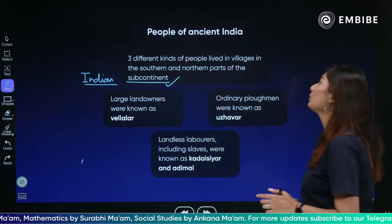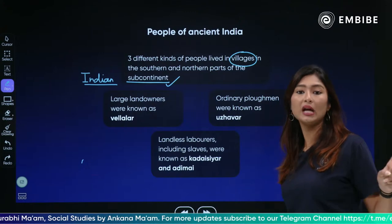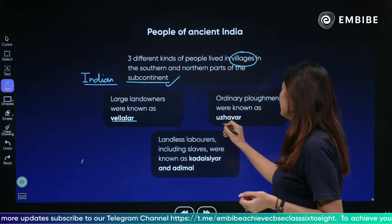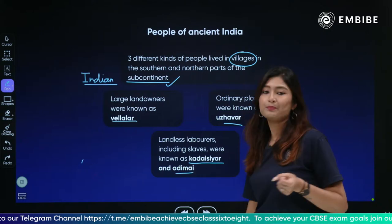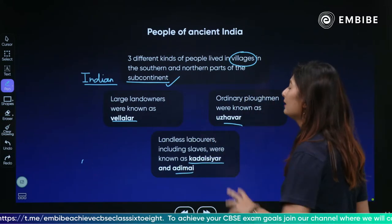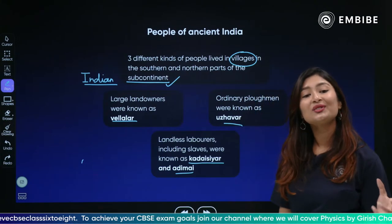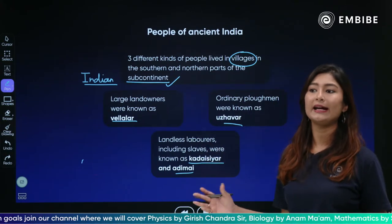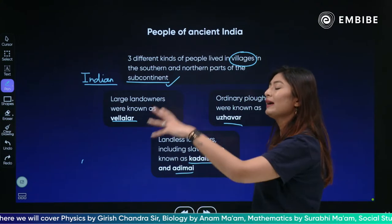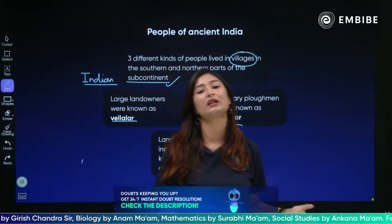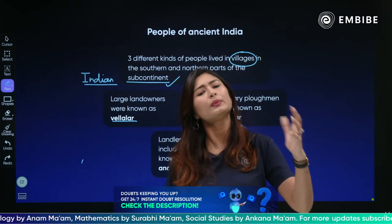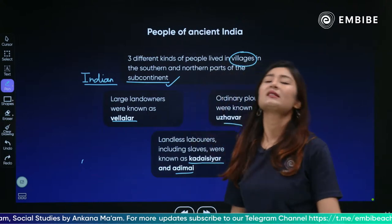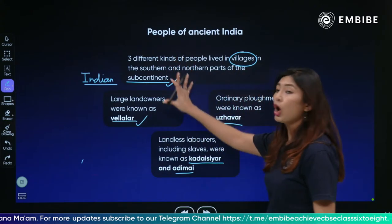So both north and south Indian subcontinent portions had three kinds of people in the village setup. First, there were the Velalar — the land owners, the aristocrats of society, the rich people, the owners of properties. Segregation has always existed — there have always been divisions in terms of economic classes, where few people have been rich and others not so much. The rich landlords and zameendars were known as the Velalar.